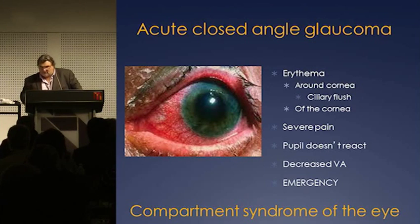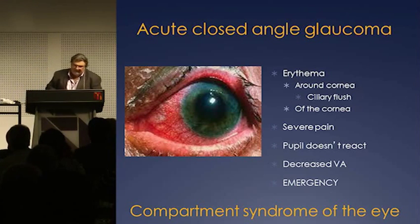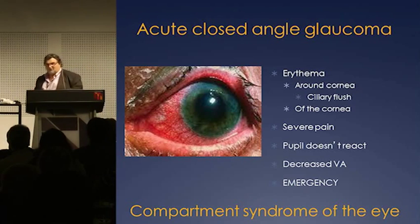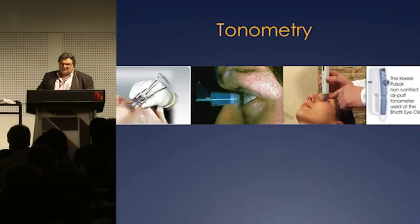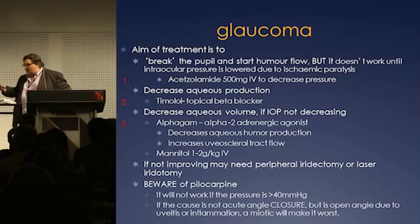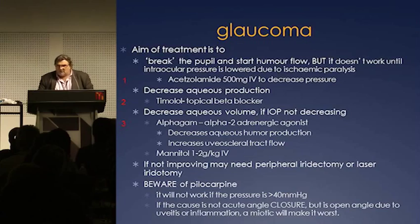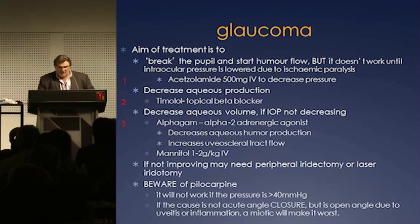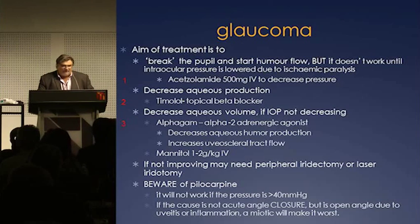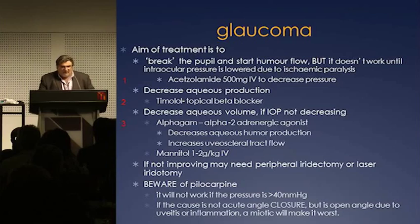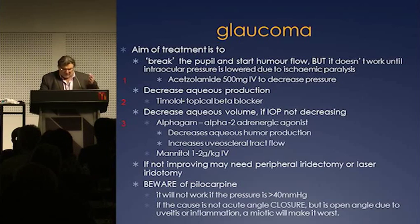The compartment syndrome of the eye — you do tonometry. The whole idea of treating glaucoma is to break the pupillary block to allow the humour to flow — but that won't work until you start decreasing intraocular pressure. Start with acetazolamide 500mg IV. Then decrease aqueous humour production with beta-blocker drops. There's also an alpha-2 adrenergic agent which is quite good at further decreasing aqueous humour. I didn't give mannitol. I spoke to the ophthalmology registrar and we transferred him to a larger hospital where he got treated.